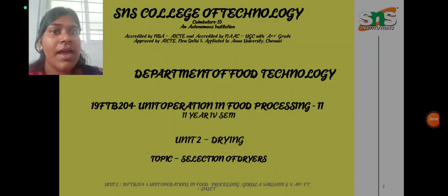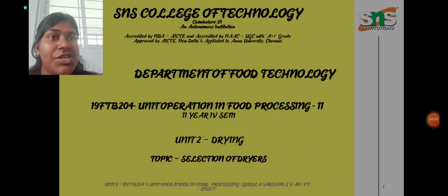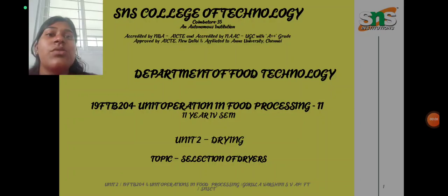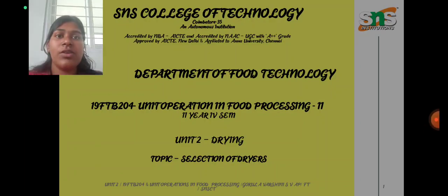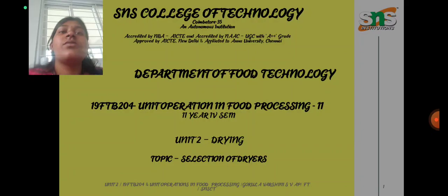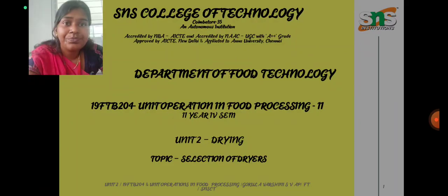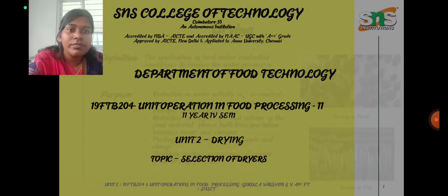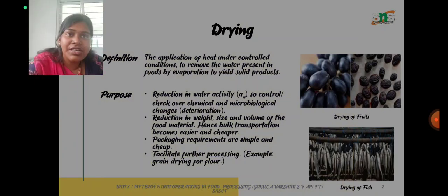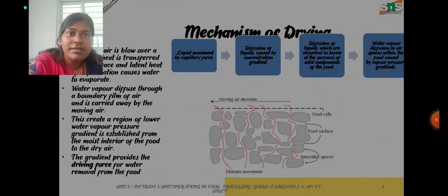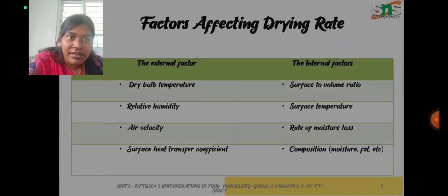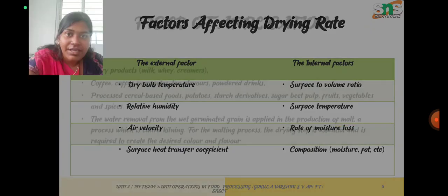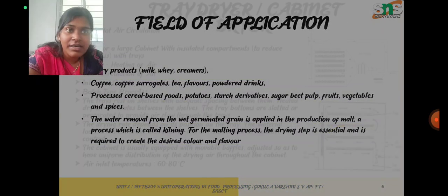Hi everyone. In the last session we have seen about the drying process. In this session we can continue with the types of dryers used for drying. So first we have seen about definition, purpose, mechanism of drying, phases of drying, and factors affecting the drying rate and field of application.